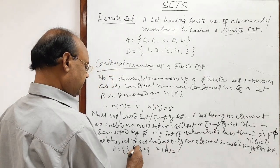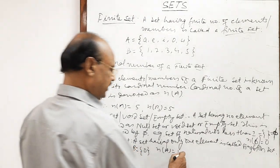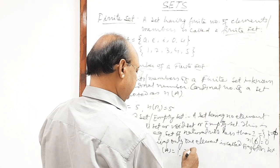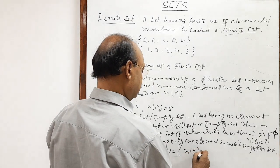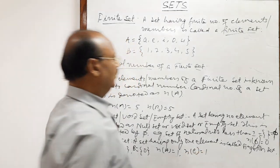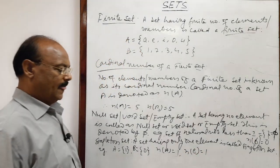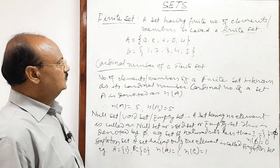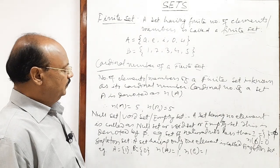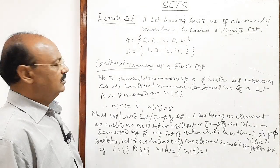Suppose this is set B containing the element 0, then n(B) is also equal to 1. Now, next we will see what is an equal set, and what are the differences between equal sets and equivalent sets.